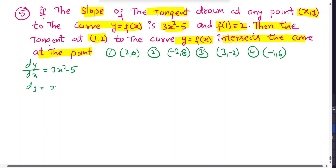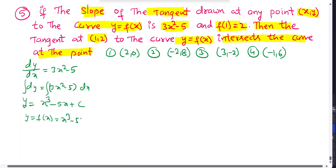Integrating: dy = (3x² - 5)dx, so y = x³ - 5x + C. Given f(1) = 2: 2 = 1 - 5 + C, so 2 = -4 + C, giving C = 6. Therefore the curve is y = x³ - 5x + 6.